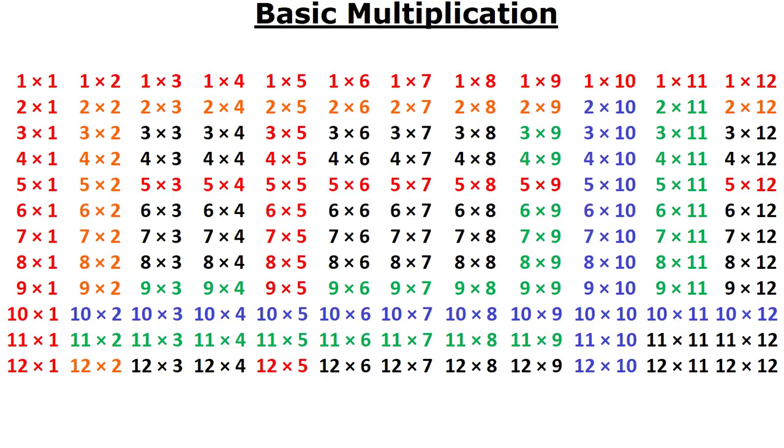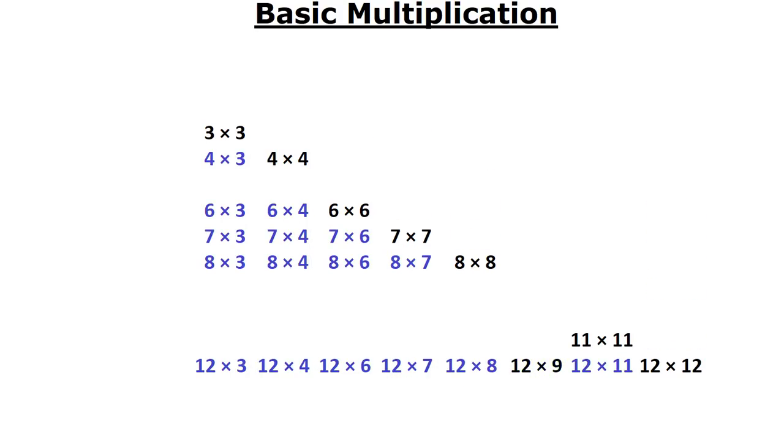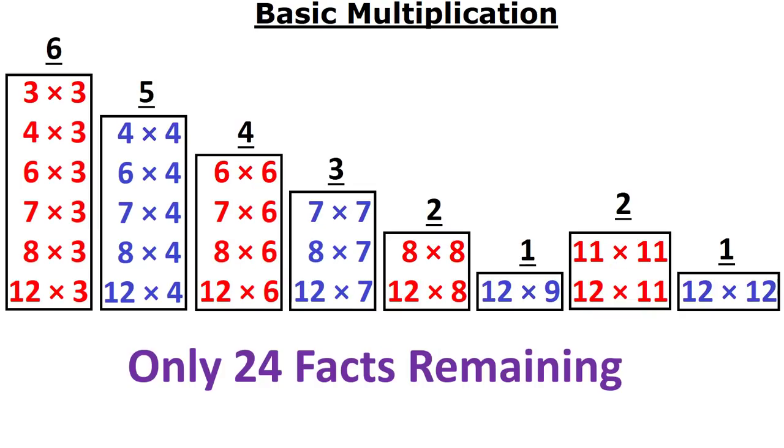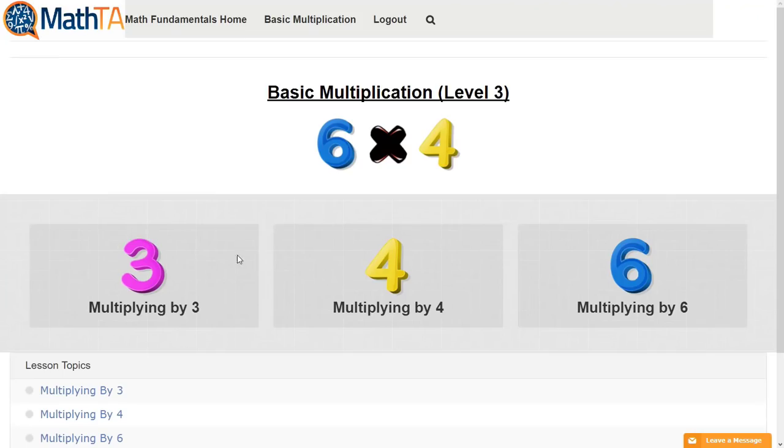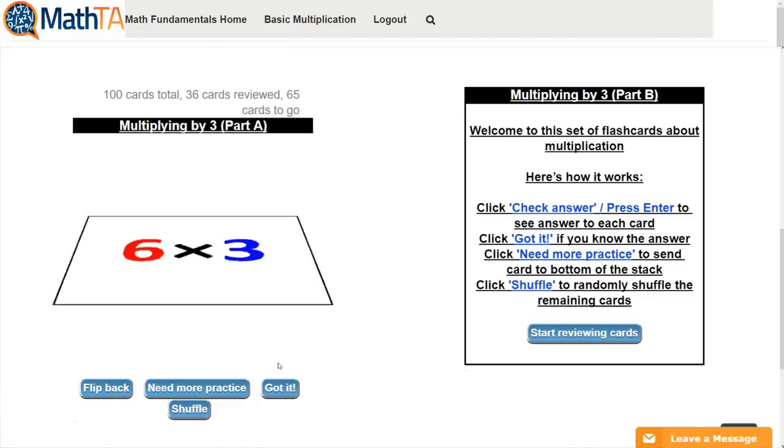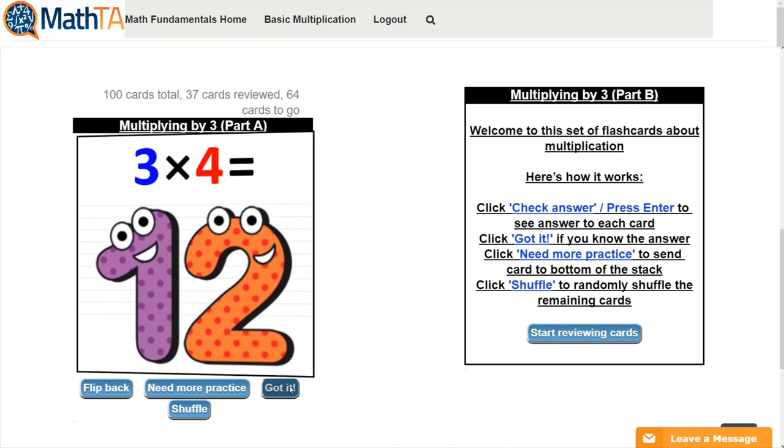And of those remaining 41, once we remove the duplicates of multiplying by 3, 4, 6, 7, 8, and 12, we only have 24 facts remaining. And you can learn those remaining 24 in record time in addition to the 6 rules with daily practice just 10 to 15 minutes a day using any computer, any tablet, or phone. So what are you waiting for? Get started now.